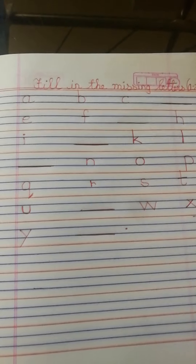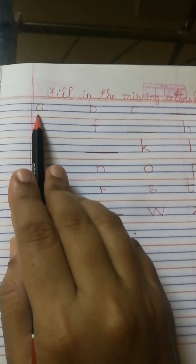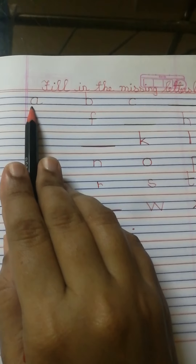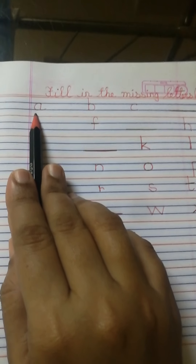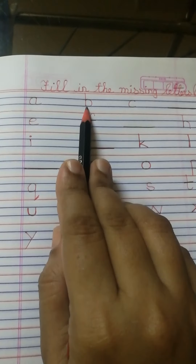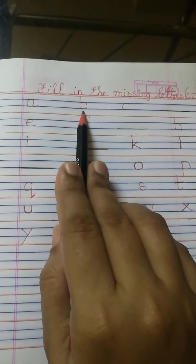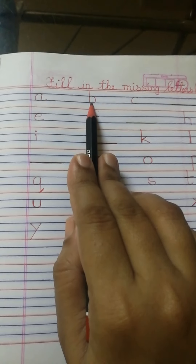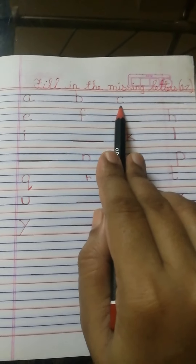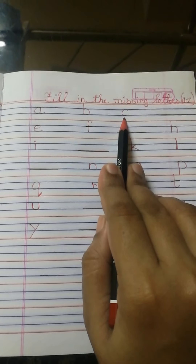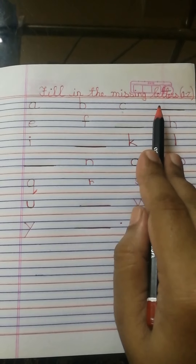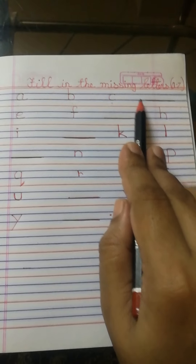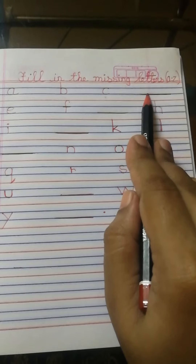Now let's start. The first letter is small a. Next to small a it is small b. Next to small b it is small c. Now, next to small c, what is there? There is a dash — so which letter is missing?